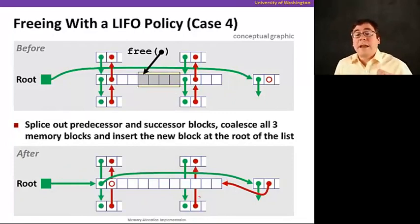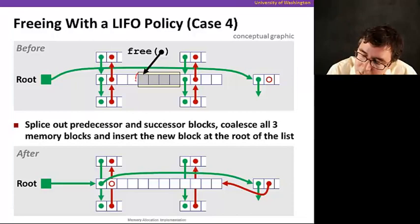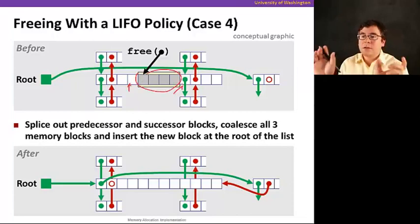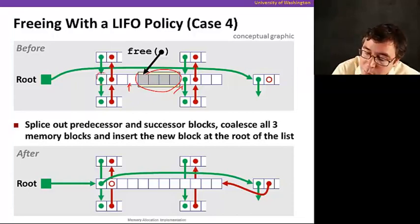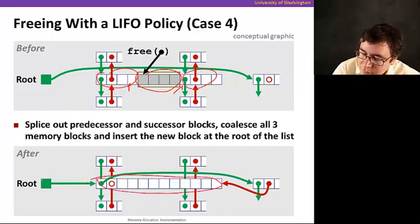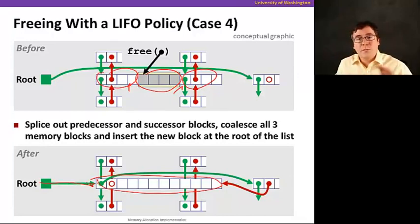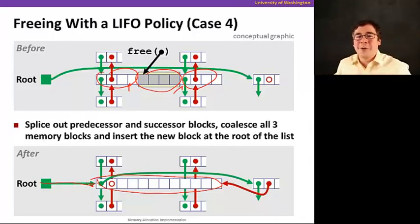The fourth and last case is when you free a block and there are free blocks on both sides of it that can all be coalesced into one large block. We remove the old ones from the list, create a new large block, and insert this large block at the beginning of the list so the root points there. Hopefully this happens a lot so we end up with lots of large blocks.